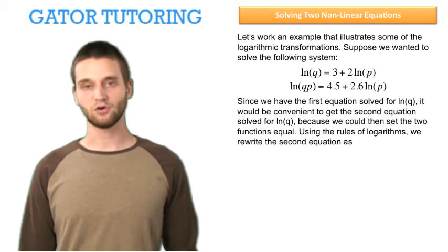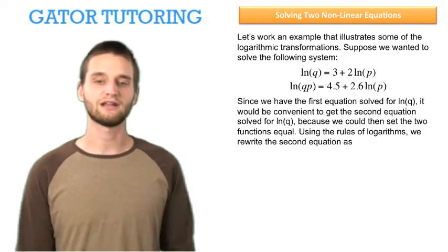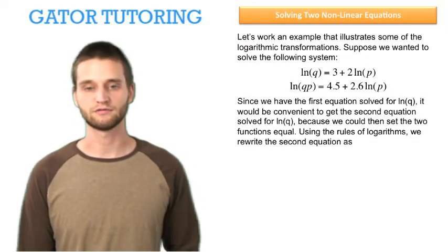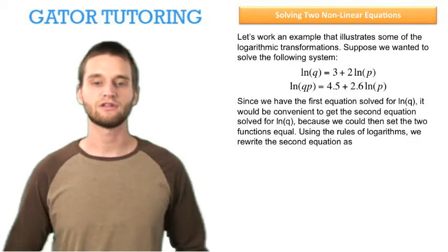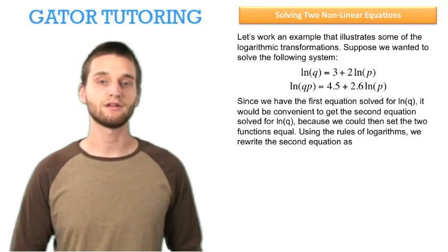Since we have the first equation solved for the natural log of q, it would be convenient to get the second equation solved for the natural log of q, because then we could just set the two functions equal to each other. Again, this is going back to the basic method of substitution.